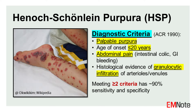Diagnostic Criteria. The American College of Rheumatology (ACR) established diagnostic criteria for HSP in 1990, which include: 1) palpable purpura, 2) age of onset below 20 years, 3) abdominal pain such as intestinal colic or gastrointestinal bleeding, and 4) histological evidence of granulocytic infiltration of arterioles or venules. Meeting at least two of these four criteria has a sensitivity and specificity of approximately 90% for diagnosing HSP in adults.